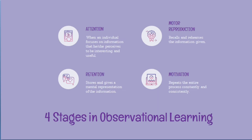According to the social cognitive theory, attention happens when an individual focuses on information that he or she perceives to be interesting and useful. Retention happens when an individual stores and gives a mental representation of the information. Motor reproduction happens when an individual recalls and rehearses the information given. And motivation happens when an individual repeats the entire process constantly and consistently. An example is solving a difficult mathematical problem: the student listens to the math teacher, reads books and memorizes formulas and principles, practices solving different equations, and does this over and over again to learn accurately with ease.